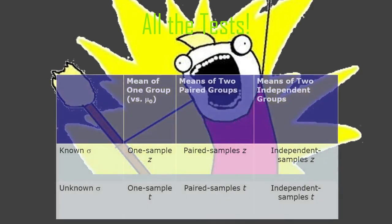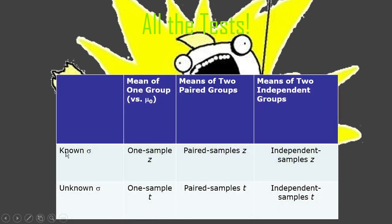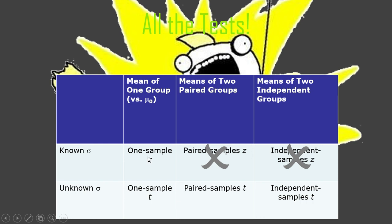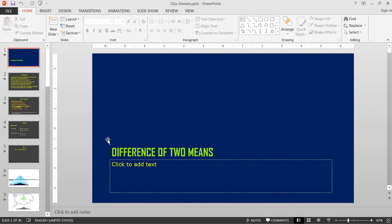Theoretically there are several types of tests: if you have a known population standard deviation, you have one-sample z, paired samples z, or independent samples z. All those situations also apply to t-tests when you don't know the standard deviation. However, we're not going to do the one-sample z much after this — we use it for proportions tests, but for means we won't use it because we don't know the population standard deviation.